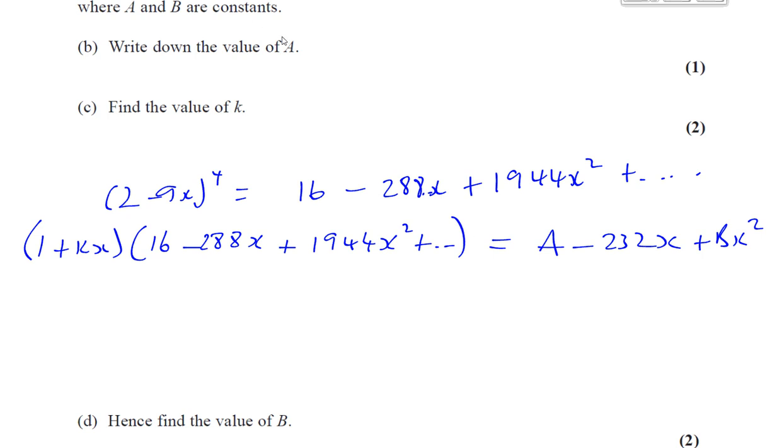So first of all, it says write down the value of a. Now, a, if you multiply this bracket out, you'll end up with something that looks like this. And a is a term which doesn't have any x with it. It's just a constant term. It's when you multiply just the numbers without any x's by each other. So 1 times 16 is the only term which will have no x's associated with it. If you multiply 1 by all the other terms or kx by all these terms, you'll end up with something with x or x squared or x cubed. So we know that a must be equal to 16. So a is equal to 16. That's not something that we really had to calculate. And that's why it says write down the value of and it's only worth one mark. So that's pretty clear for part B.